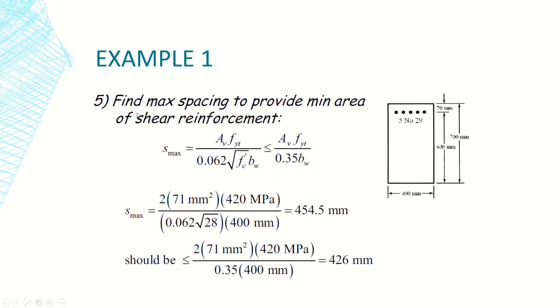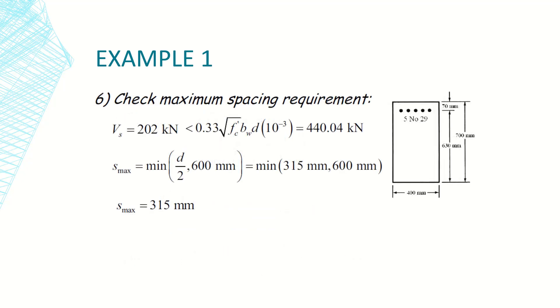Now let's find the maximum spacing to provide minimum area of shear reinforcement. In the zones where we need Av minimum, let's calculate the corresponding spacing which is the maximum allowable spacing. Here we have two limits: either Av f yield over 0.062 radical f prime c b web, or Av f yield over 0.35 b web. The smaller value we can see here is 426 millimeters.